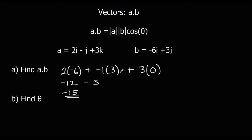So a·b is negative 15. And we can use that for part b, to find the angle between the two vectors. We've got a·b; now we need to find mod a and mod b.